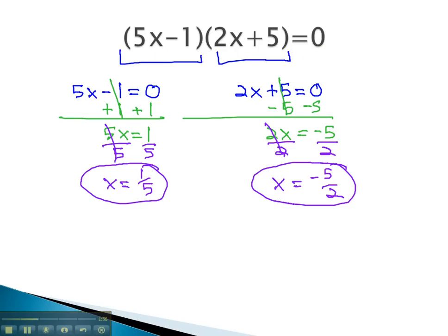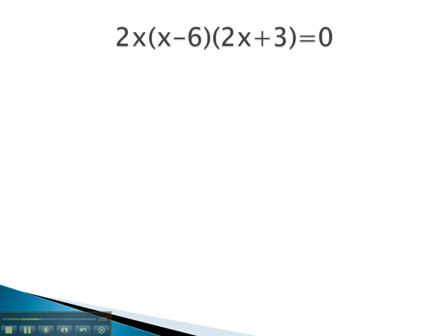Let's take a look at another example where we use this zero product property to find solutions. Here, we have three factors multiplied together: 2x is multiplied by x minus 6 is multiplied by 2x plus 3. One of those factors must be 0 for this equation to equal 0, so we set them each equal to 0. 2x equals 0, x minus 6 equals 0, and 2x plus 3 equals 0.